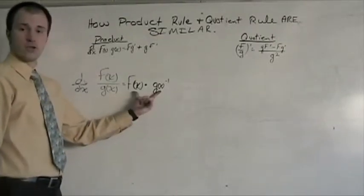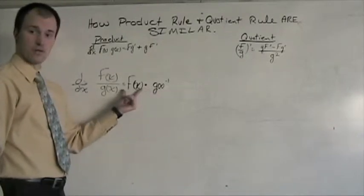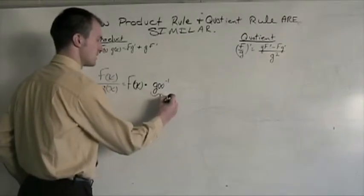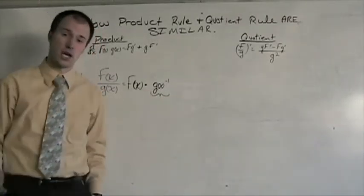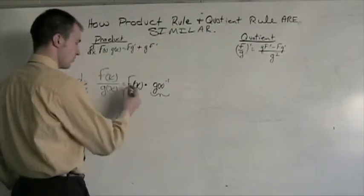Here now I'm going to use product rule. First times derivative of the second plus second times the derivative of the first. And I just need to remember to treat this second piece here as a general power rule.